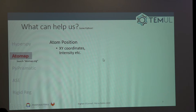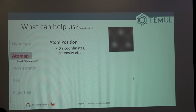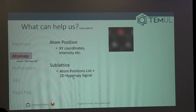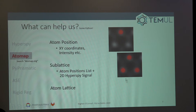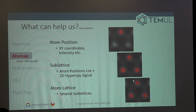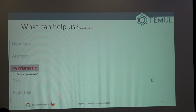AtomAP is the tool I've been using and doing development on. It's made up of three main classes. First, AtomPosition, which is made of X, Y coordinates — I've also added a Z coordinate — plus an intensity and other properties: these represent individual atoms like molybdenums and sulfurs on an image. Second, a SubLattice, which is a list of those atom positions on top of a two-dimensional HyperSpy image. Third, an AtomLattice, which is made up of several sub-lattices representing all the different atom types.